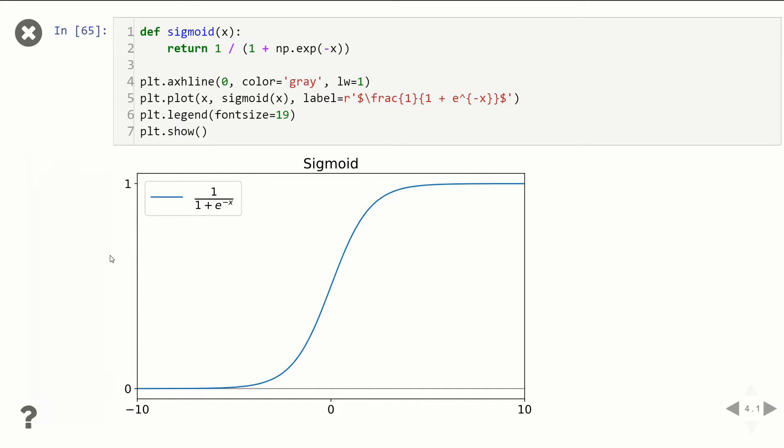And then the vertical is your output. So if you had an input of zero, you'd have an output of one half. And if you had an input of something really large, like 10 or greater than 10, the output's always going to be one.